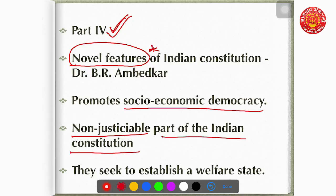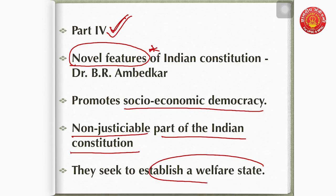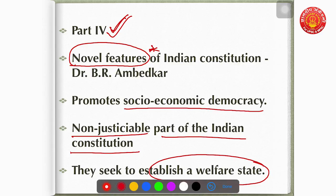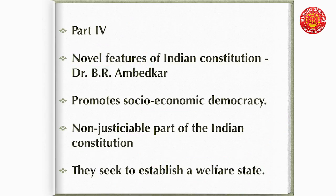DPSPs are the non-justiciable part of the Indian Constitution — unlike Fundamental Rights, which are justiciable. The most important point is that DPSPs aim at the establishment of a welfare state. A welfare state is one which works for its people from womb to tomb.